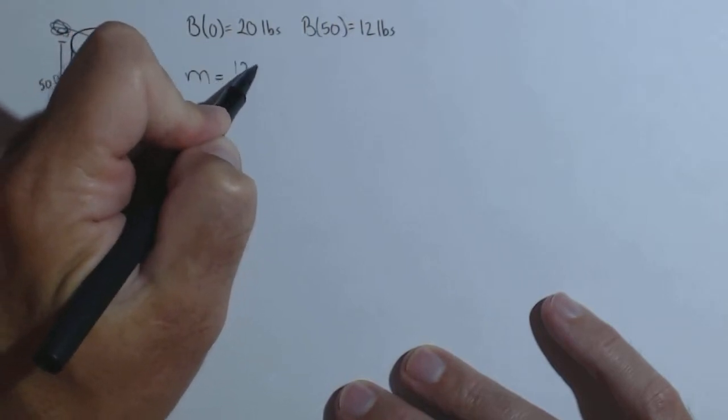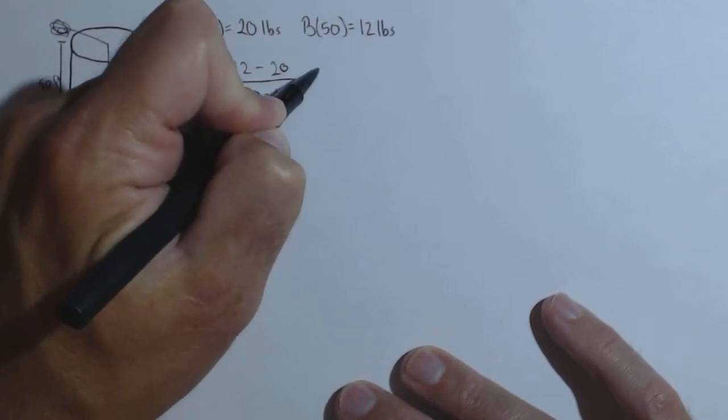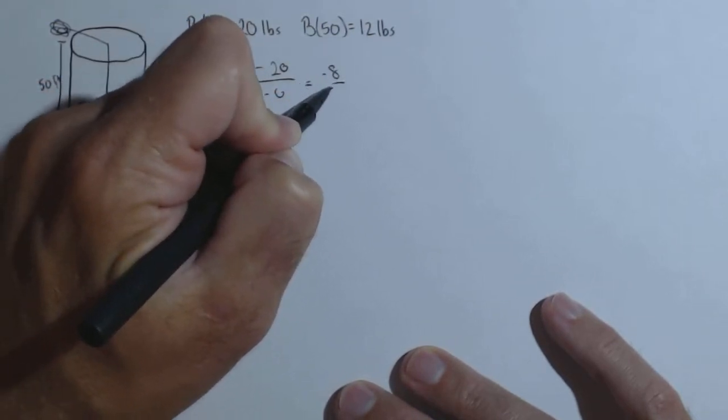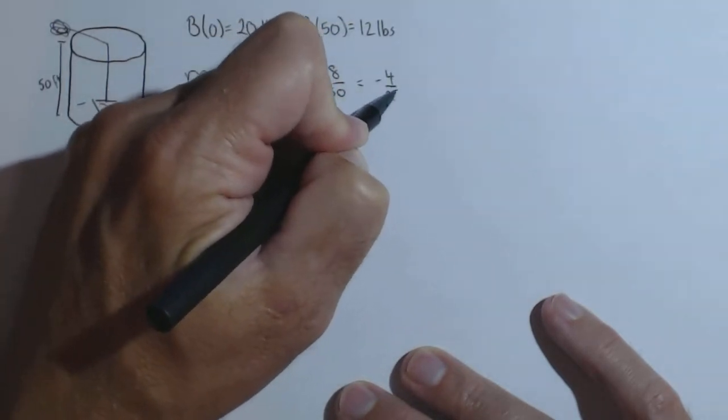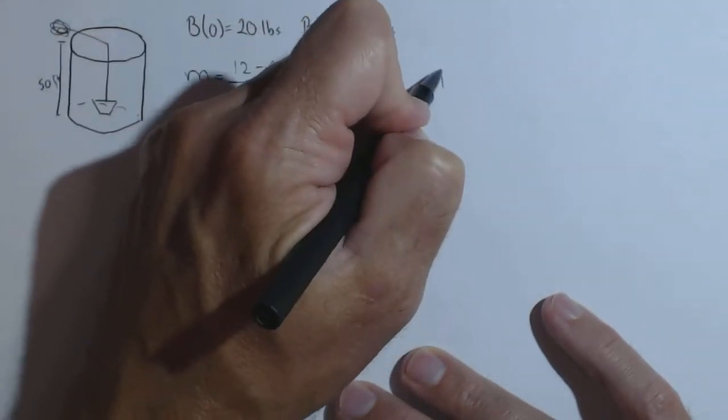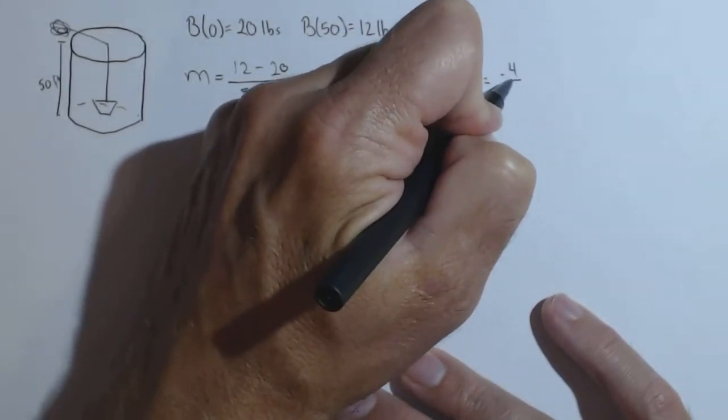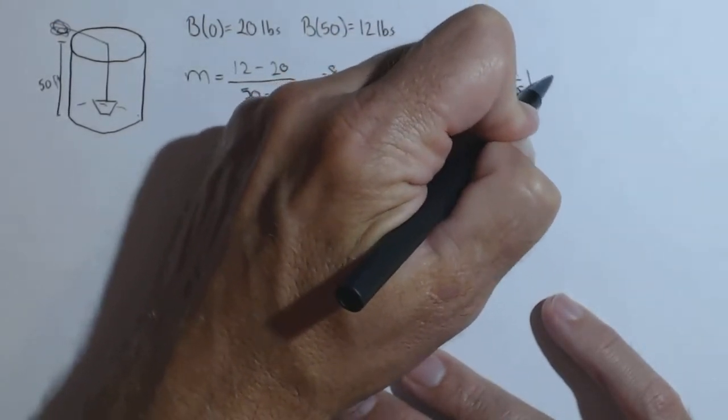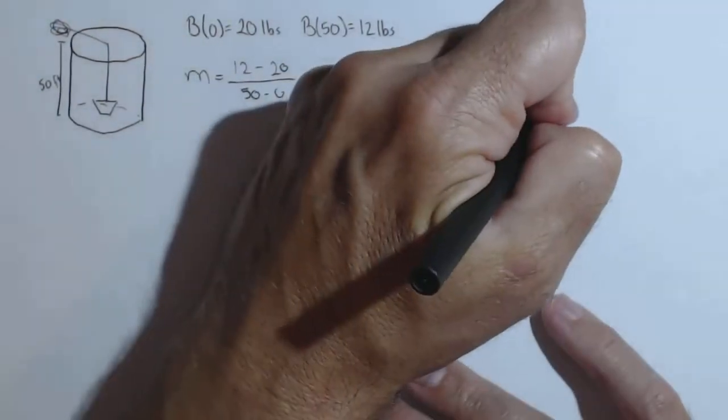So doing our change in output over our change in input, we get negative 8/50ths or negative 4/25ths. So our B(h) is negative 4/25ths h plus, we have our y-intercept right here, plus 20.